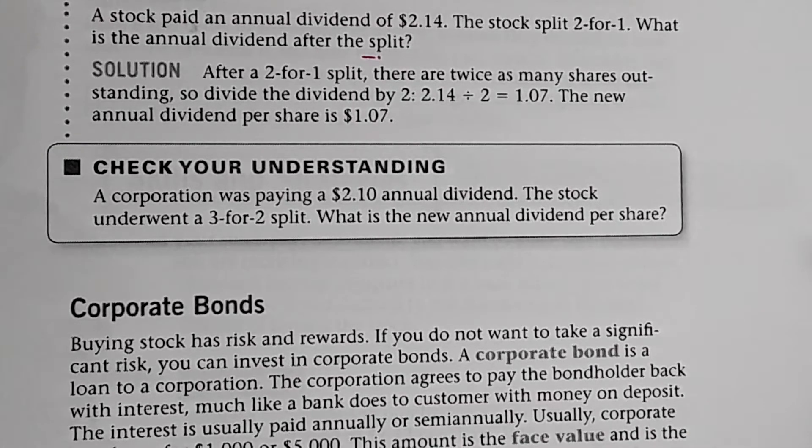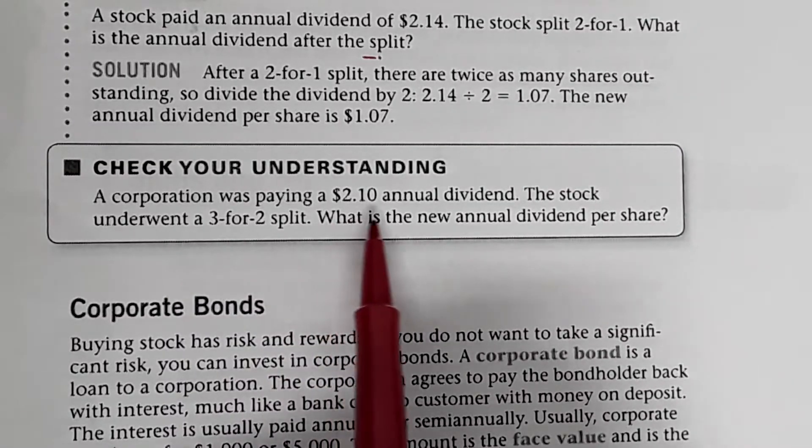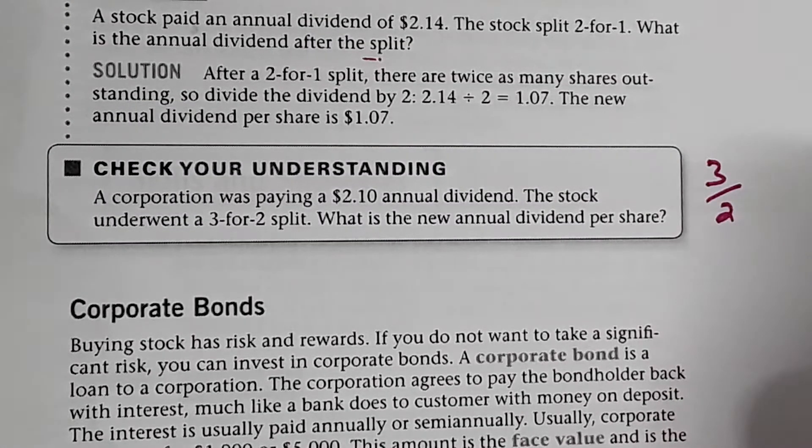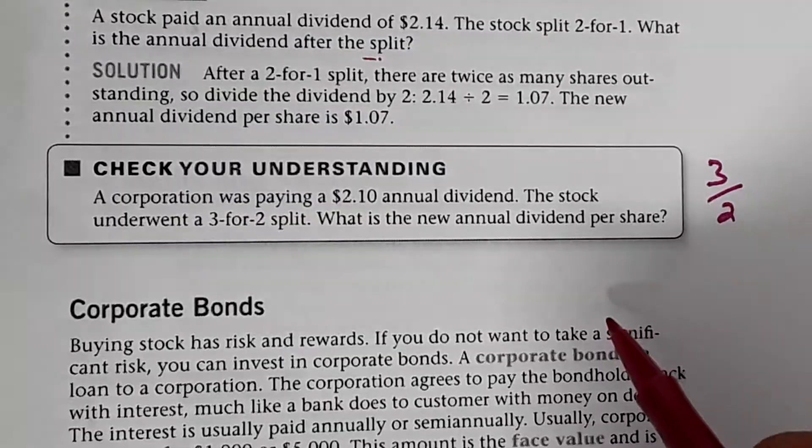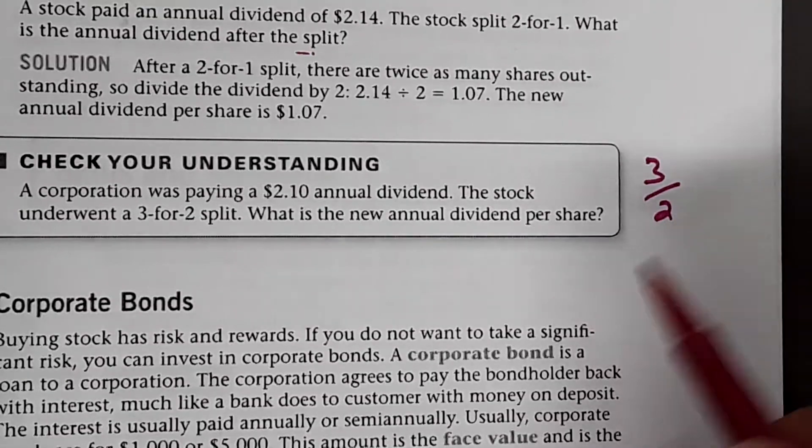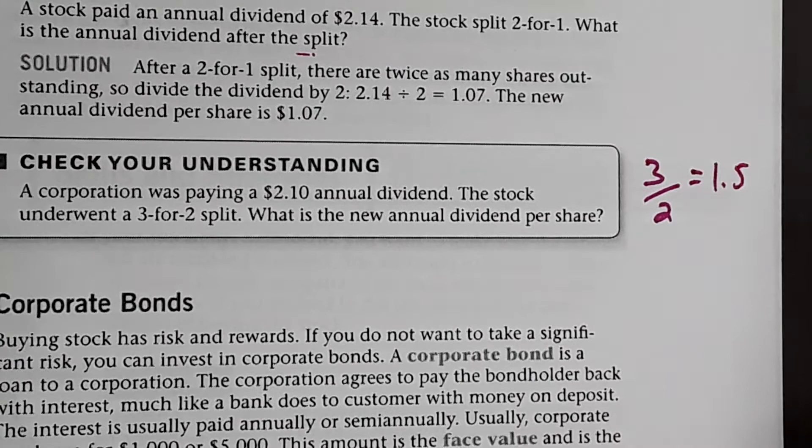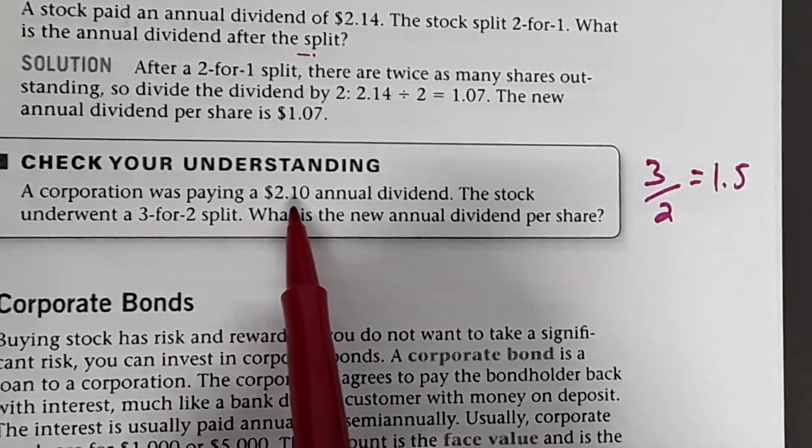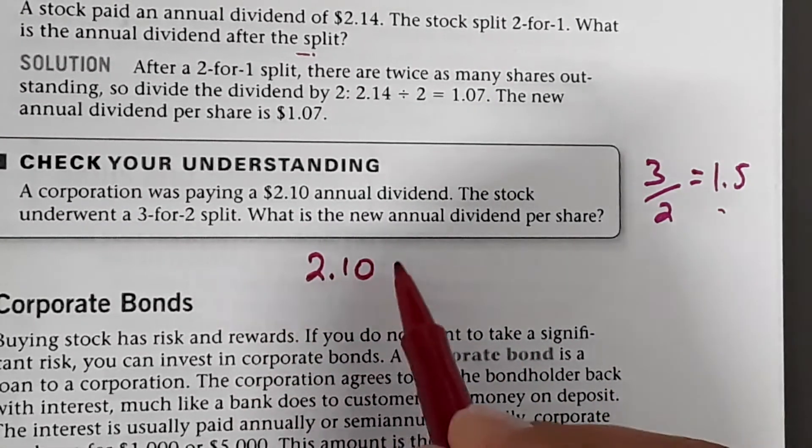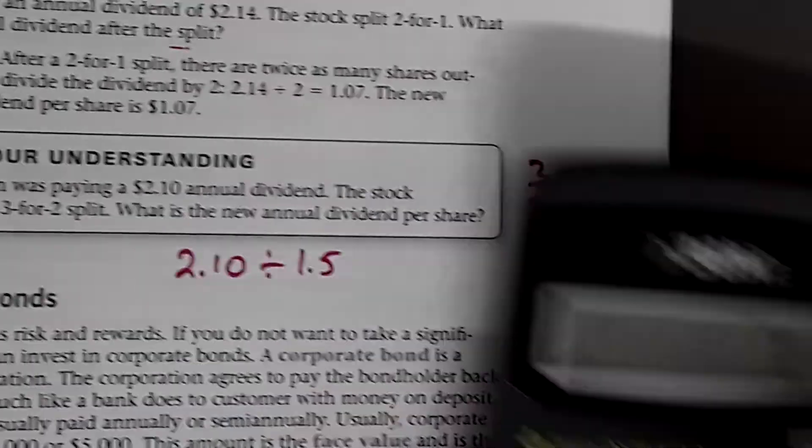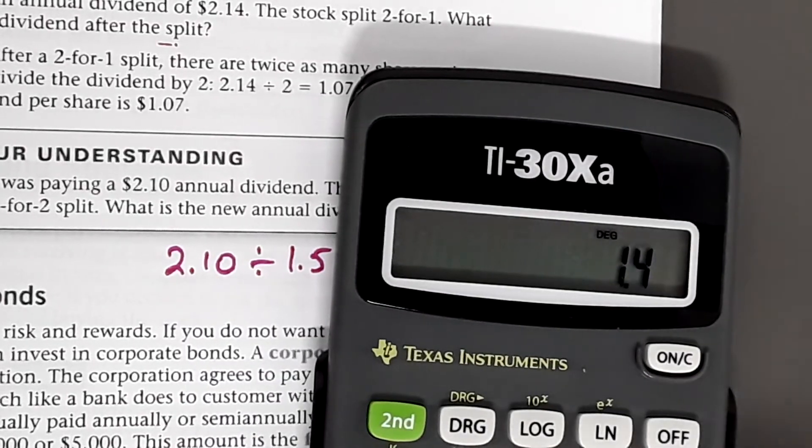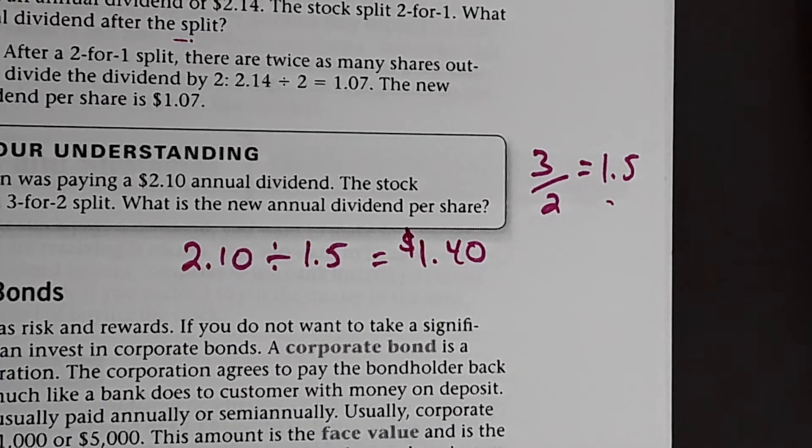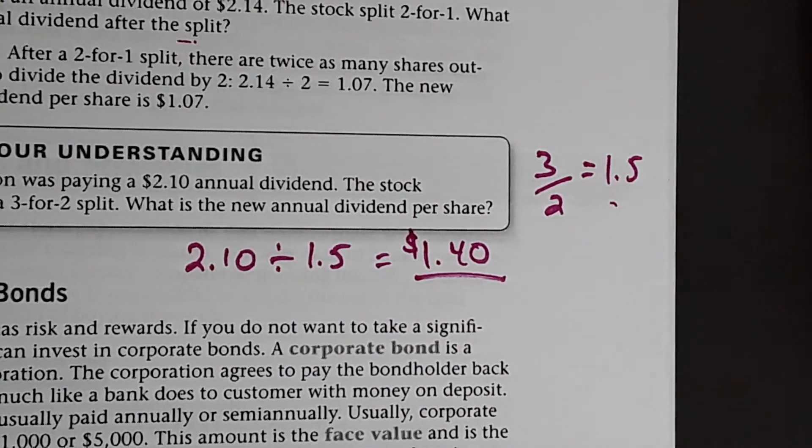All right. Last one. A corporation was paying a $2.10 annual dividend. The stock underwent a three for two stock split. What's the new annual dividend per share? Easiest way to do this would be to convert to a decimal. Three over two is equal to 1.5. If you divide that, since it's a stock split three for two, you're going to divide that by 1.5. So $2.10 divided by 1.5 is 1.4. But we're talking dollars and cents. So the new annual dividend would be $1.40. That's assignment 12. Good luck.